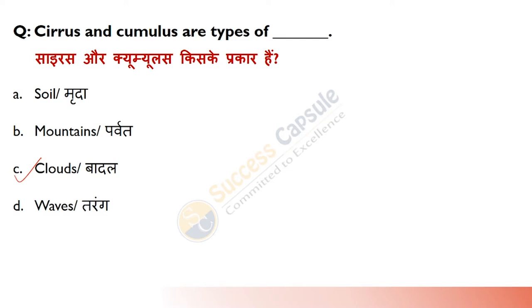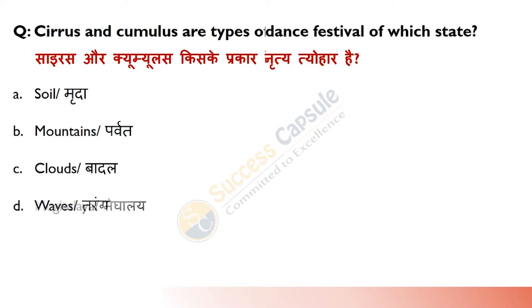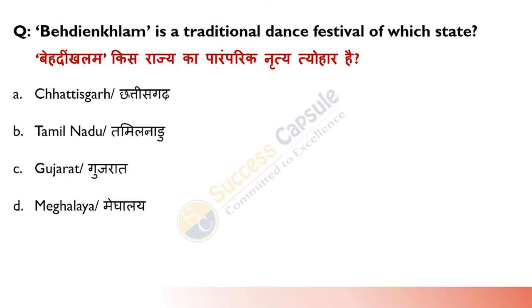Cirrus aur Cumulus kis ke types hain? Yeh clouds ke types hain. Clouds ke teen basic patterns hote hain: Cirrus, jo curly wale clouds hote hain; Stratus, jisme sheets ya layers jaise clouds hote hain; aur Cumulus, jisme bahut saare heaps aur pile jaise clouds form hote hain.